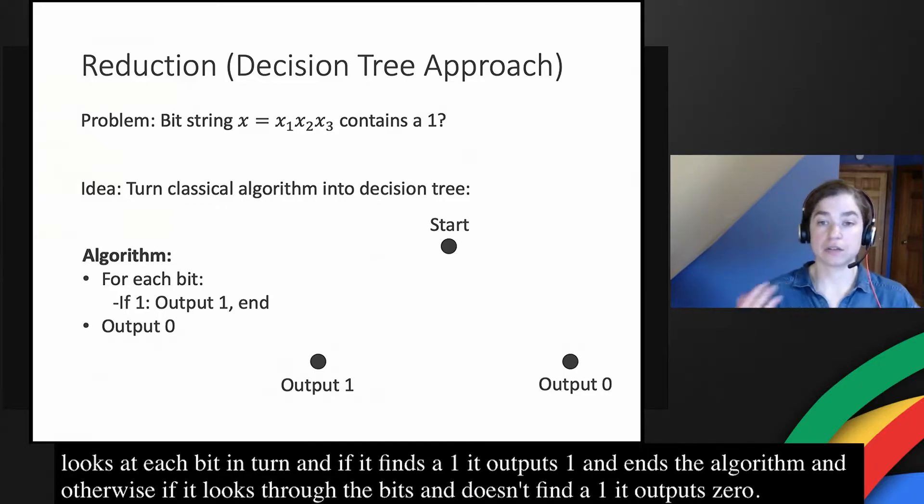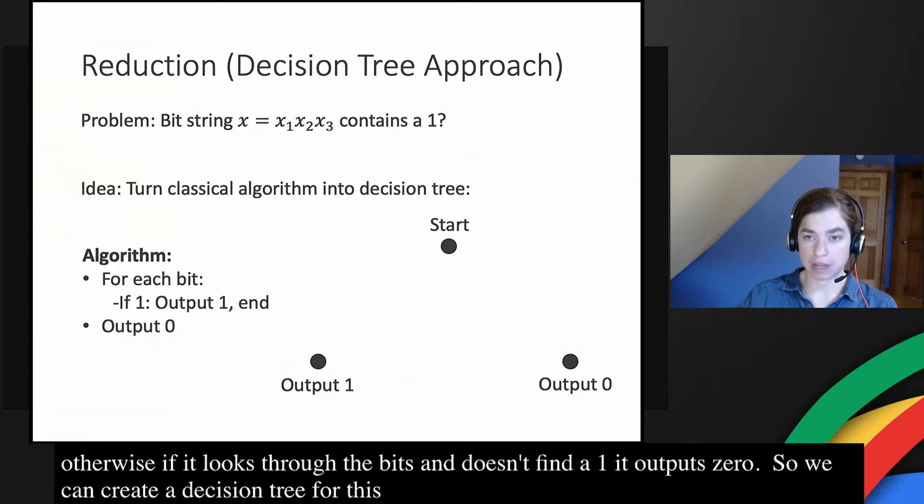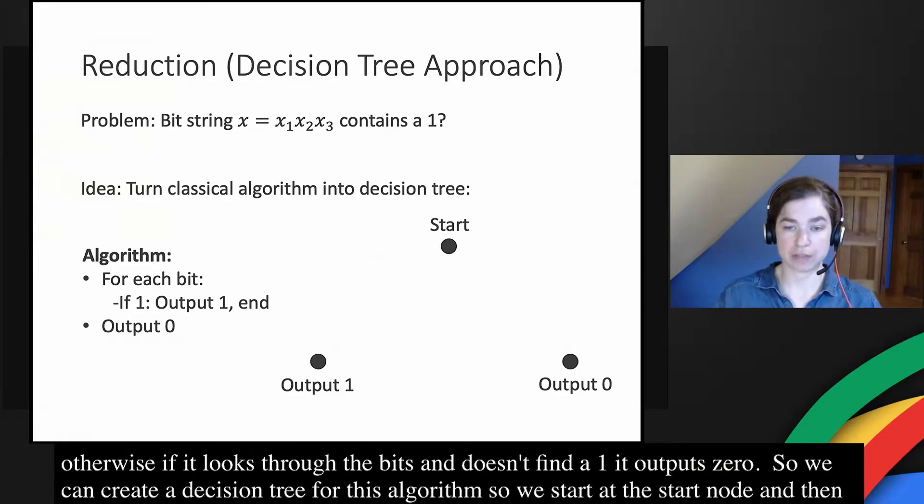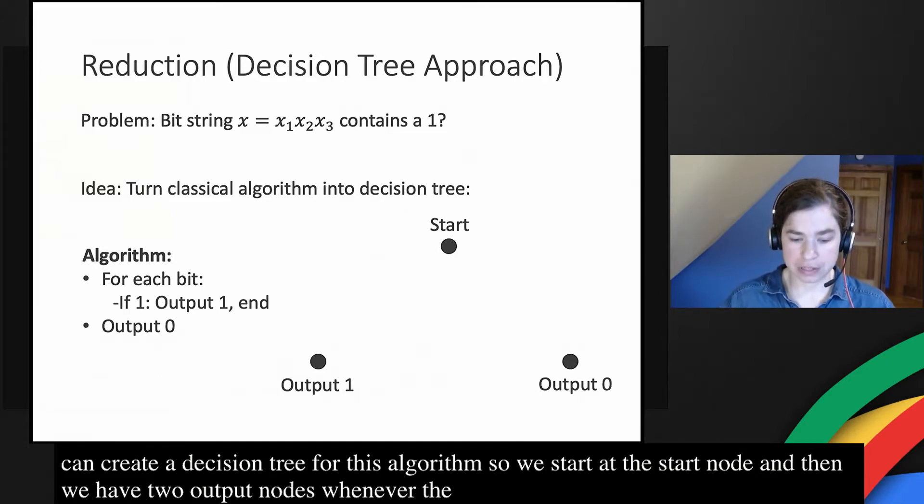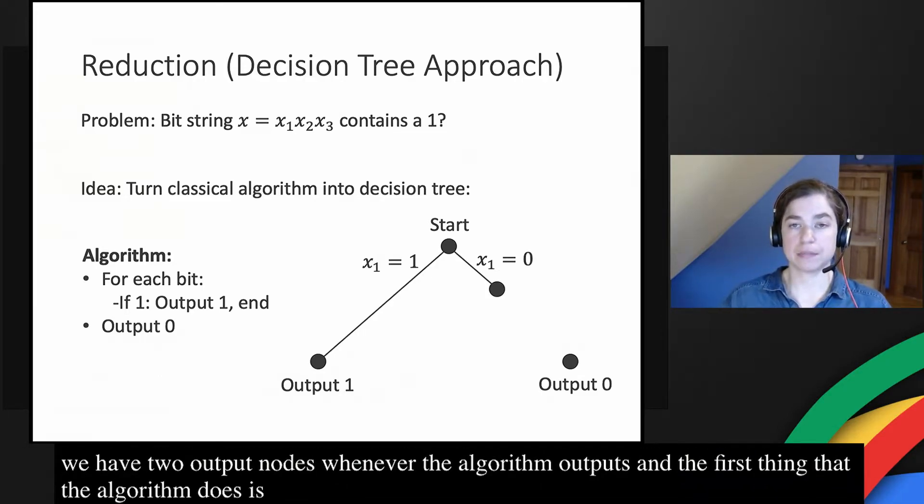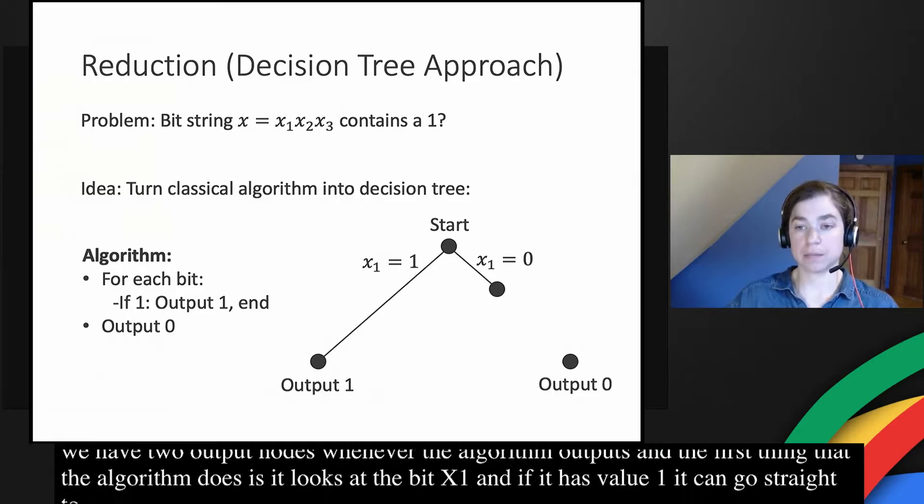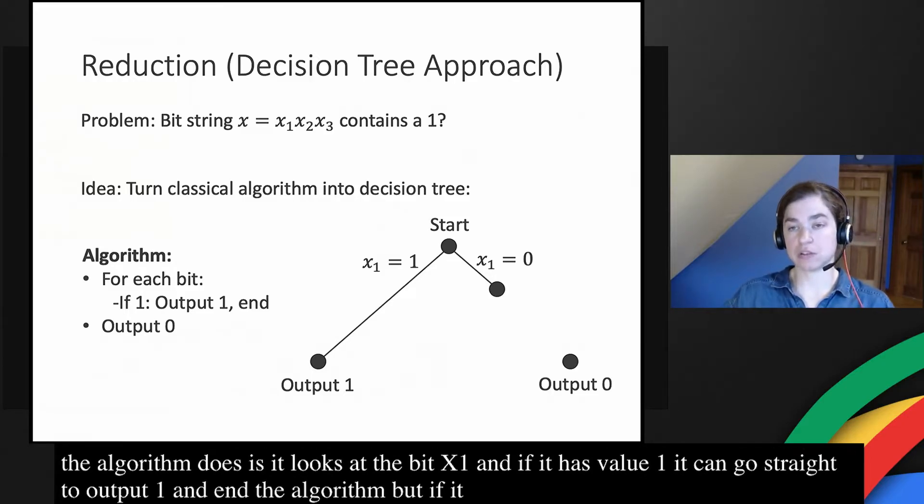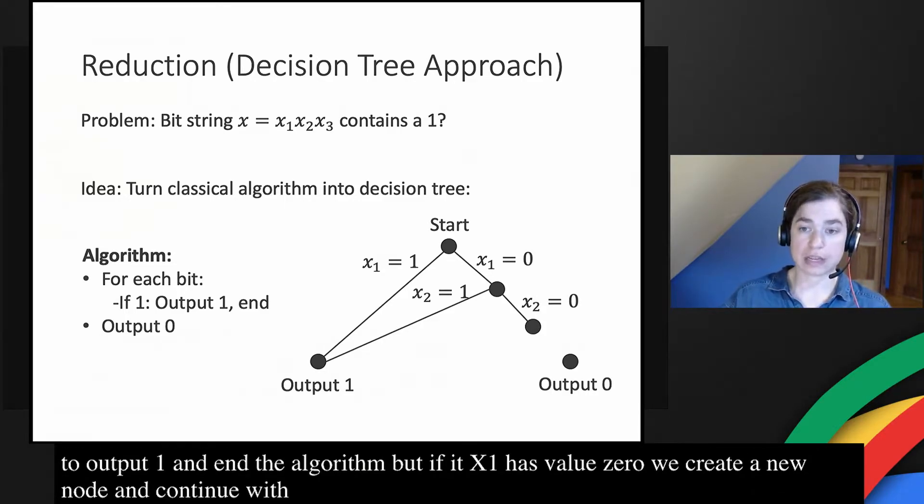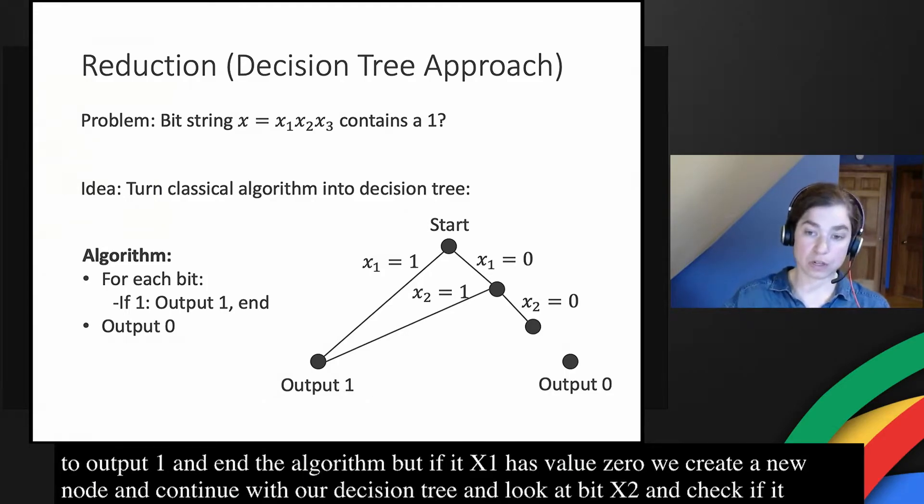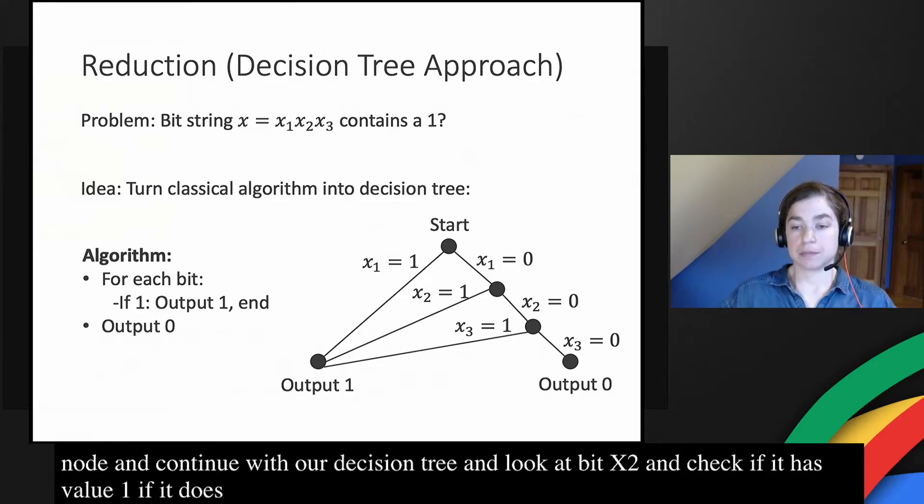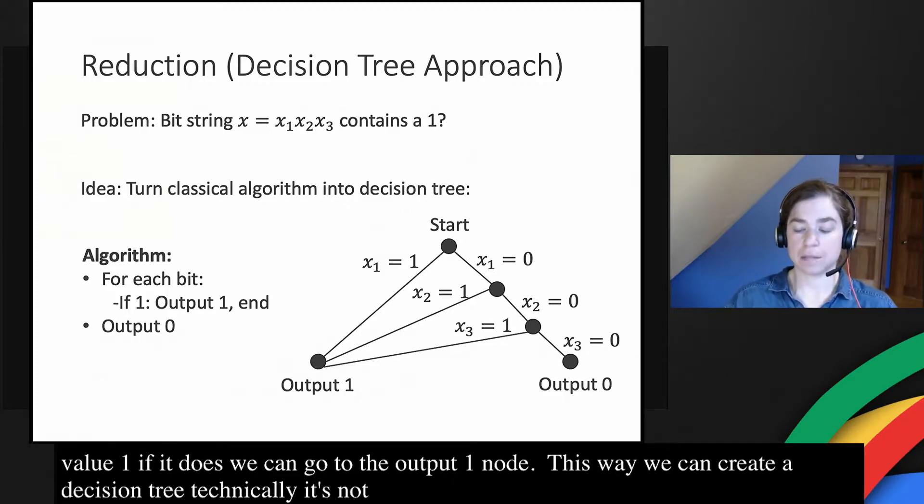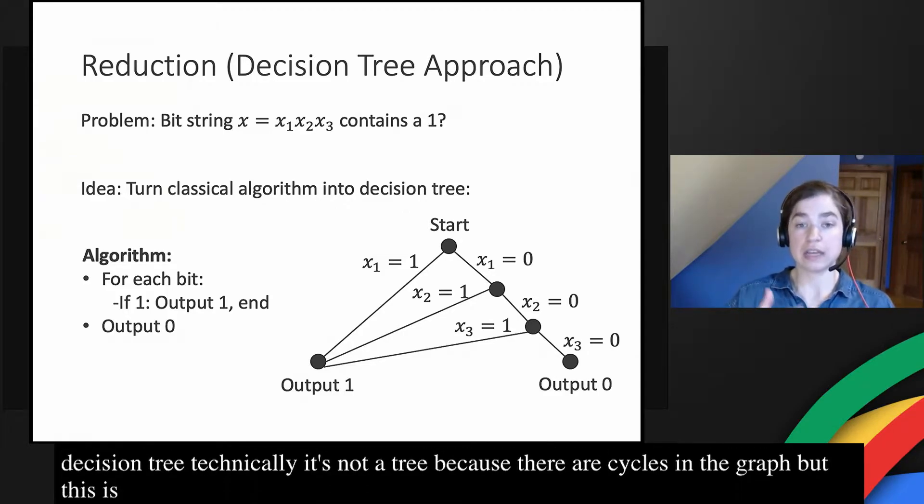We can create a decision tree for this algorithm. We start at the start node, and then we have two output nodes whenever the algorithm outputs. The first thing that the algorithm does is it looks at the bit x1. If it has value one, it can go straight to output one and end the algorithm. But if x1 has value zero, then we create a new node and continue down with our decision tree. The next thing we do is look at bit x2 and check if it has value one. If it does, we can go to the output one node. Otherwise, we have to keep going. So in this way, we can create what I'm calling a decision tree. Technically, it's not a tree because there are cycles in the graph. But this is a graph that encodes the classical algorithm.